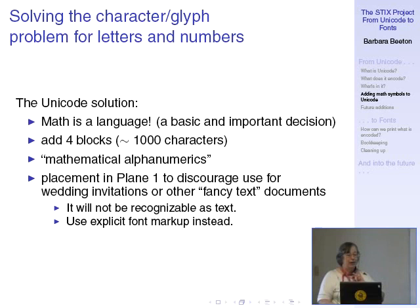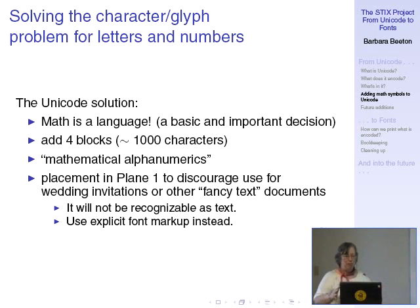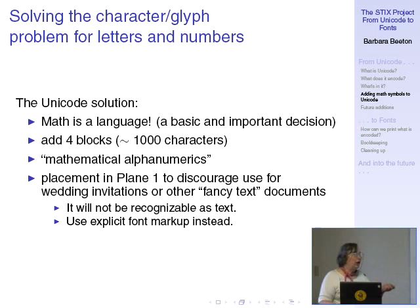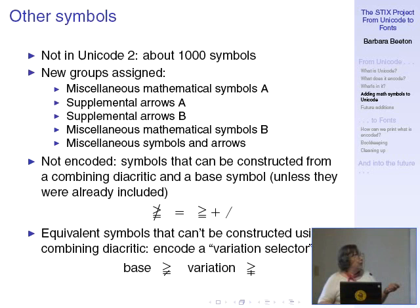The idea of putting mathematical alphanumerics in plane 1 was to sequester them where, if you really wanted to use them for a wedding invitation or some fancy thing, you'd really have to work hard. Rather than being nicely laid out like the alphabet in ASCII, everything is just glommed together — it is in order, but there's no way to calculate the location easily. So it is not text. If you want to render some sort of invitation in fancy script, use markup; this is not the proper use of Unicode.